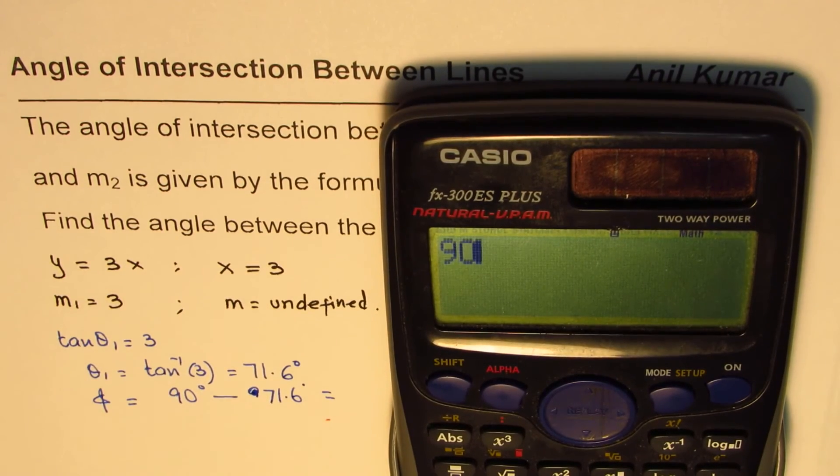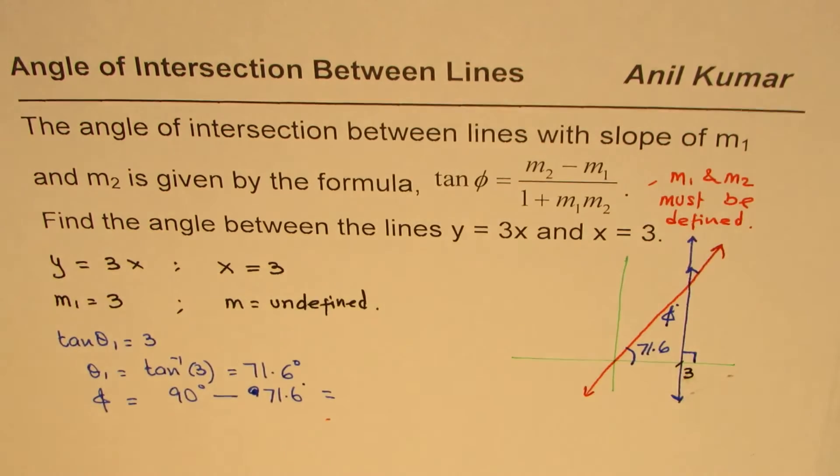So we have 90 take away 71.6, that gives you, in decimals, 18.4 degrees.